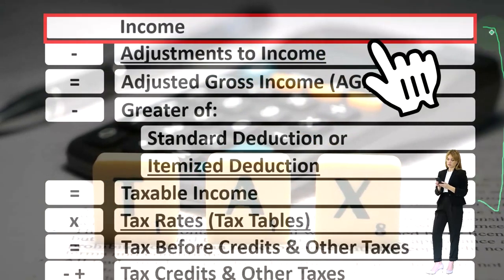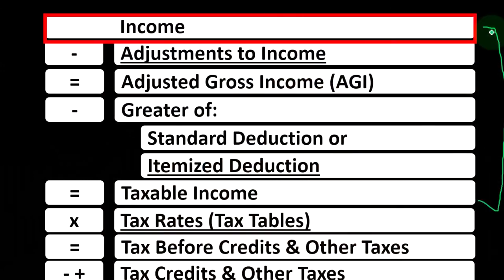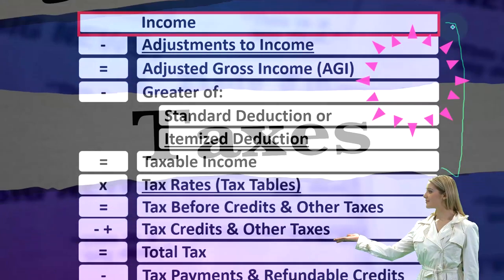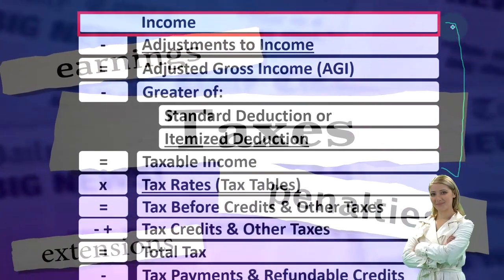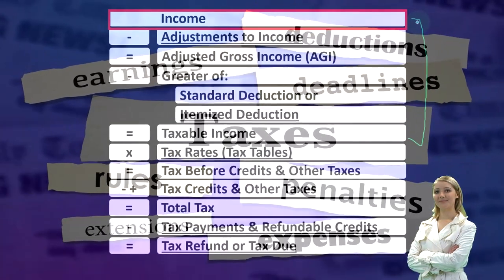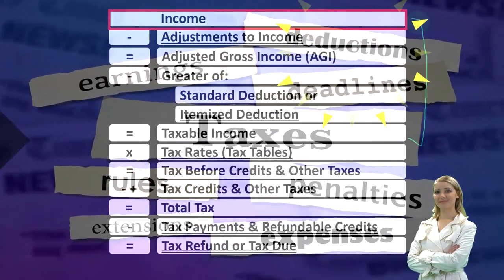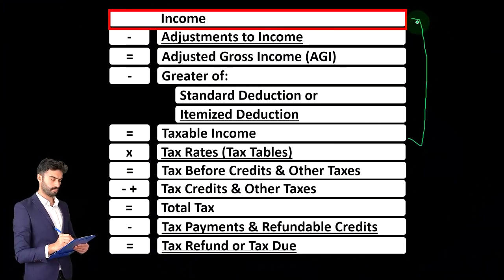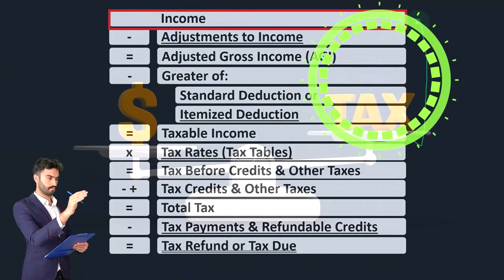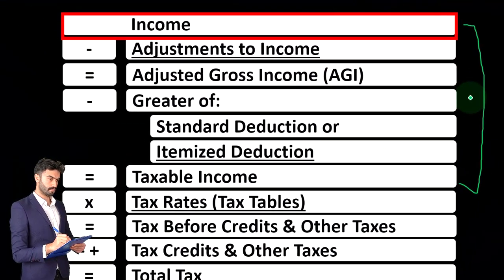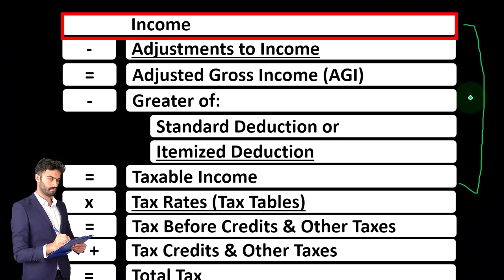When talking about line one income, the question is whether something is actually categorized as income and whether it must be included as taxable income. We'll be touching on business income, often reported on a Schedule C. This is a good point to look at deductions that aren't part of the main deduction line on the income tax formula, because there are deductions on other schedules.